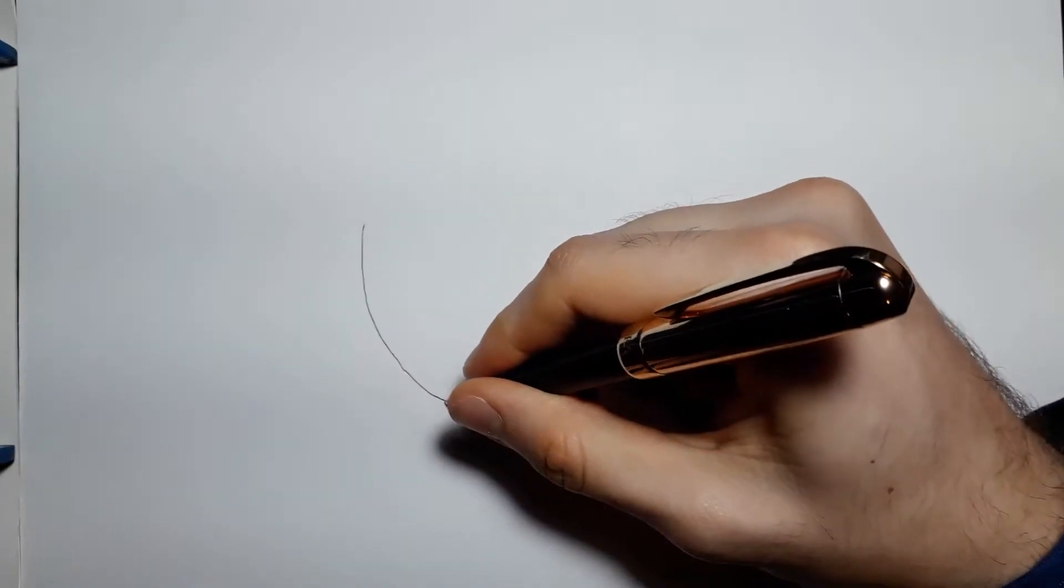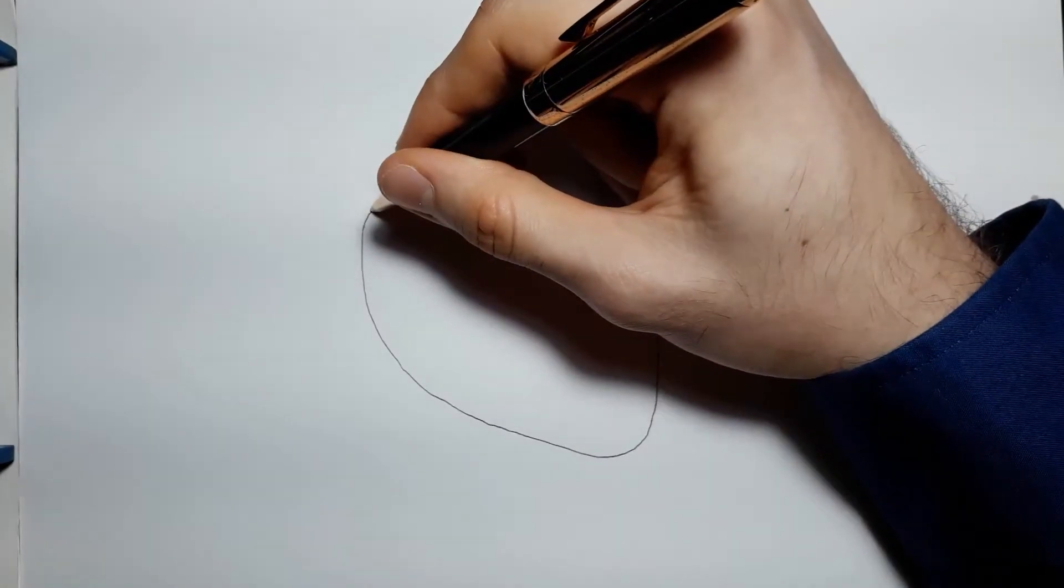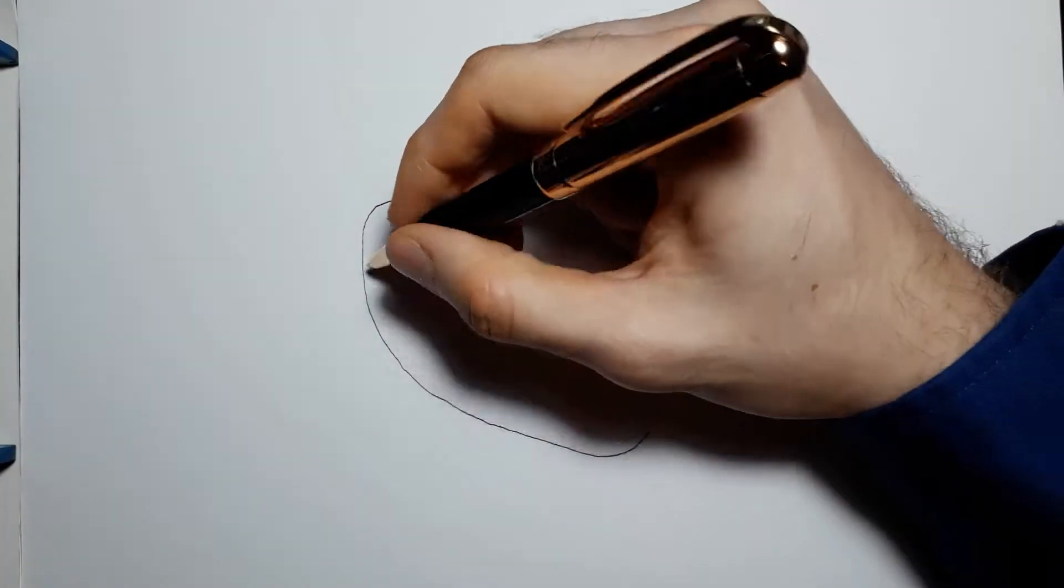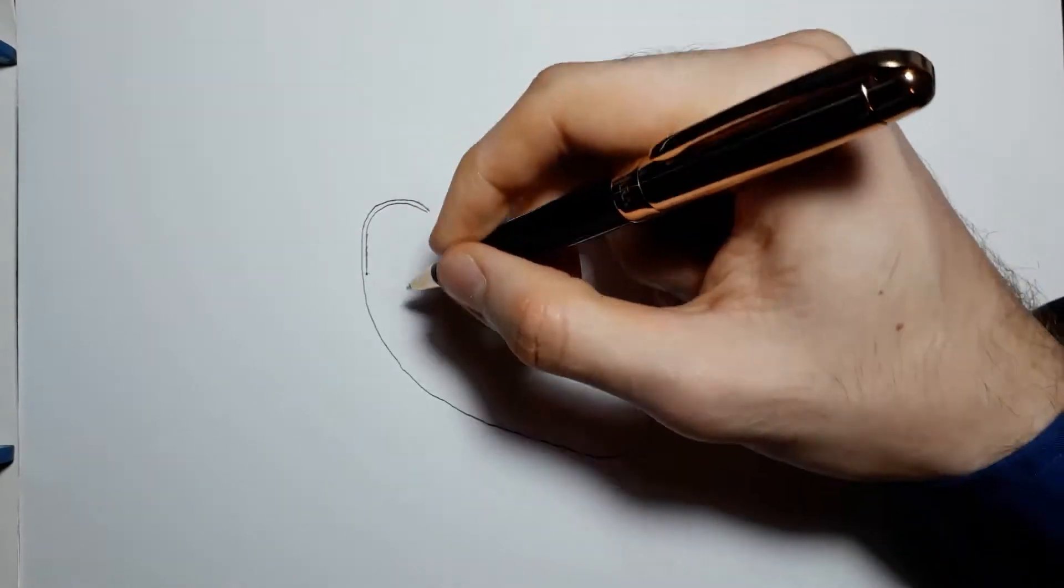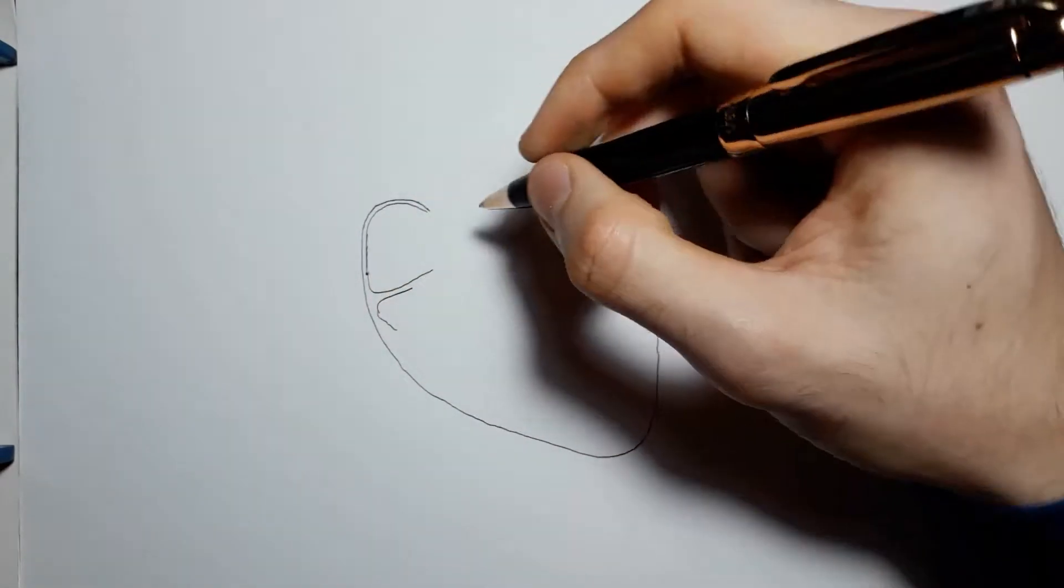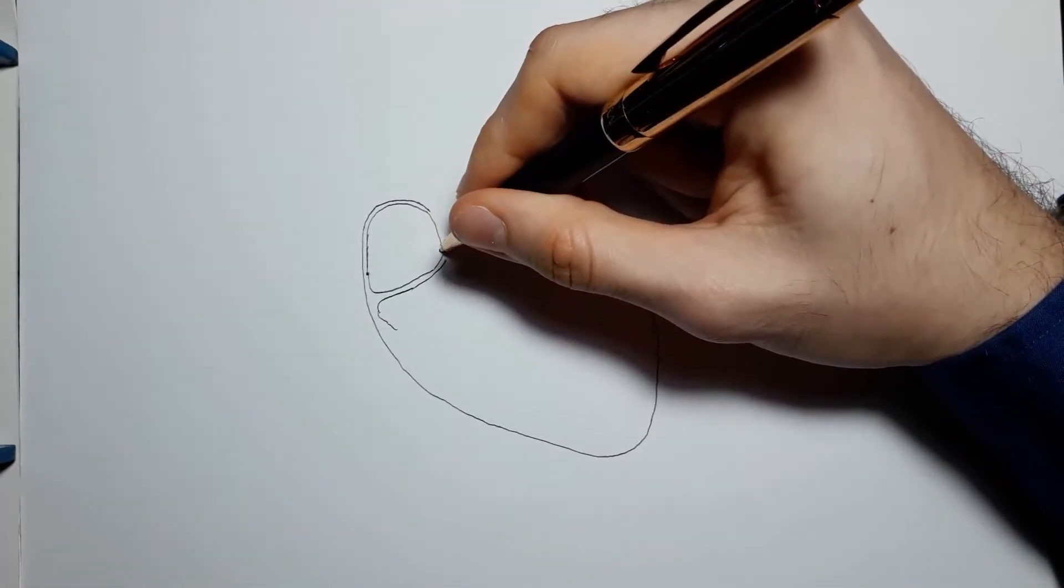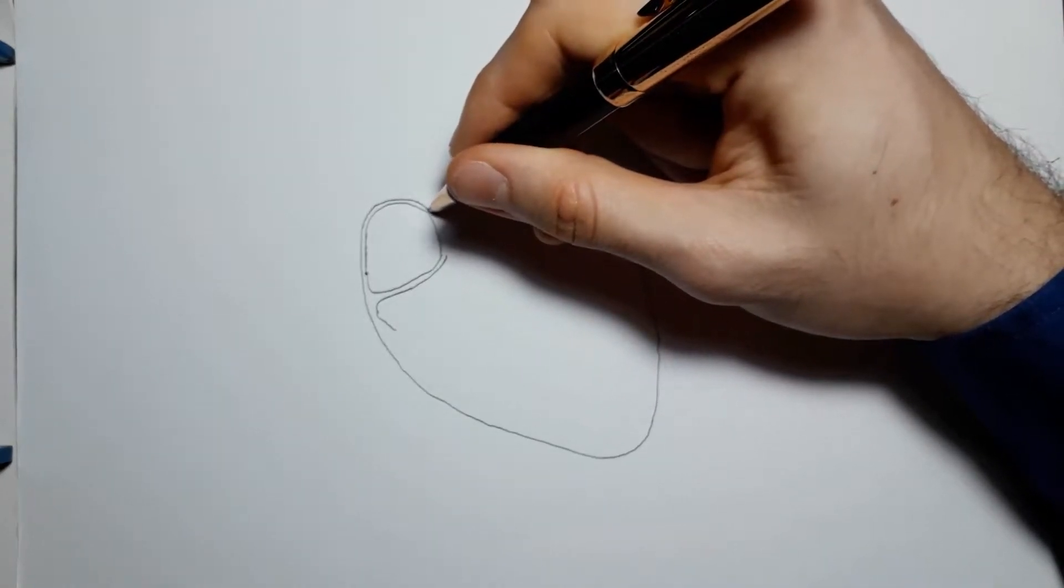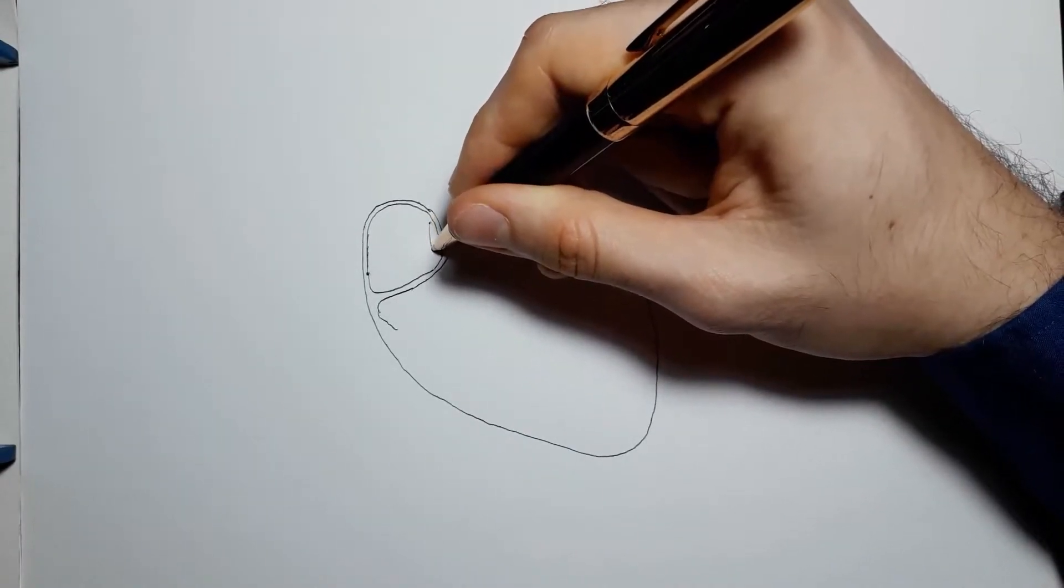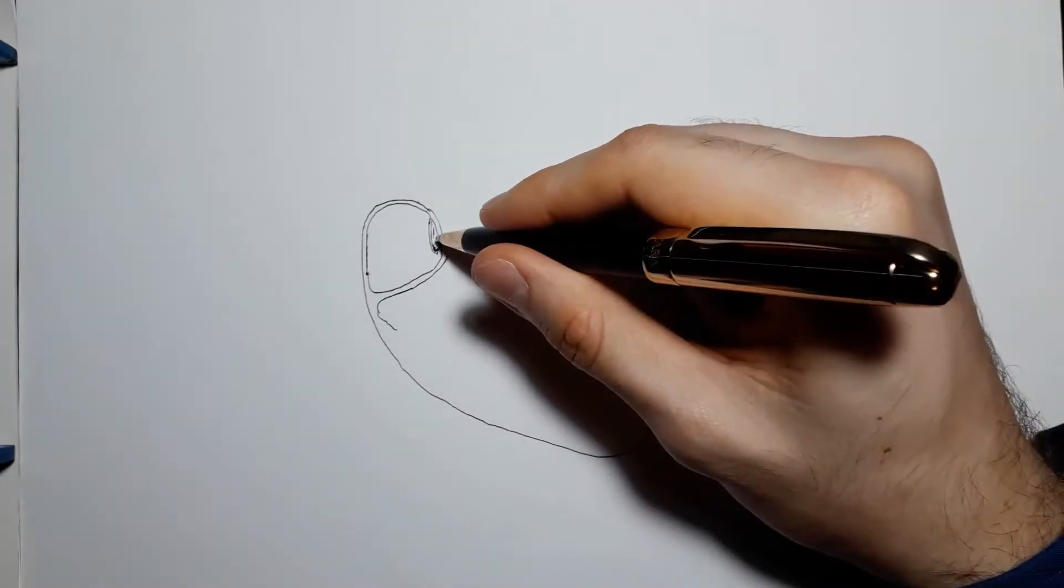However, maybe the first time you heard about tricuspid atresia you thought, well, so have no tricuspid valve, so have nothing to prevent blood from back flowing from the right ventricle to the right atrium during ventricular systole. That's kind of a severe tricuspid regurgitation. That's not good, but I can't really see how it's cyanotic.